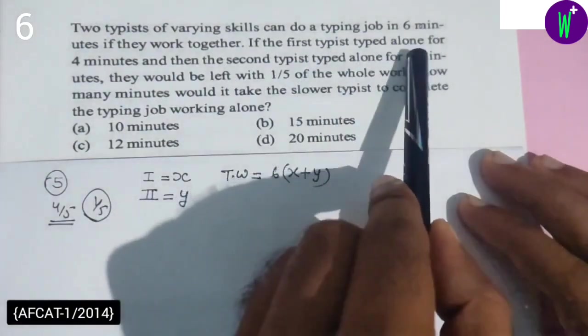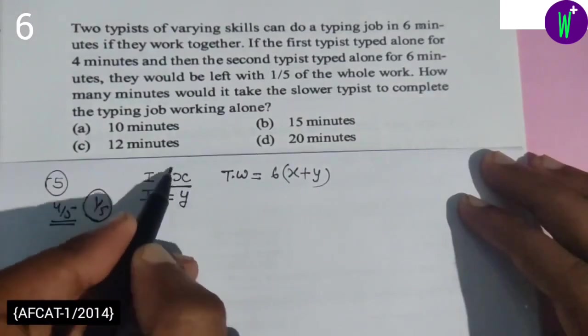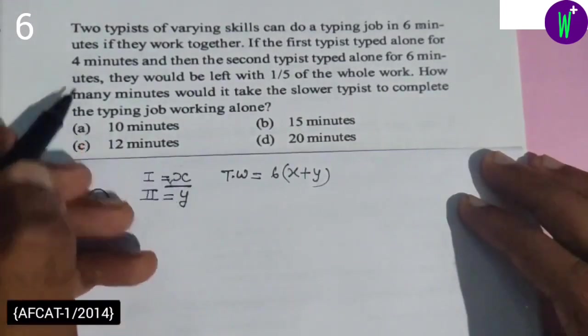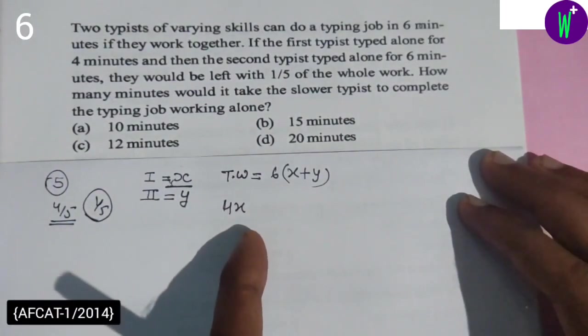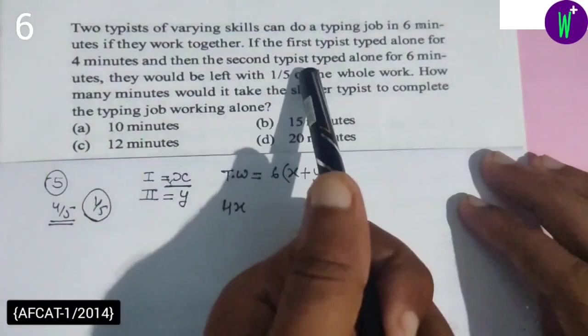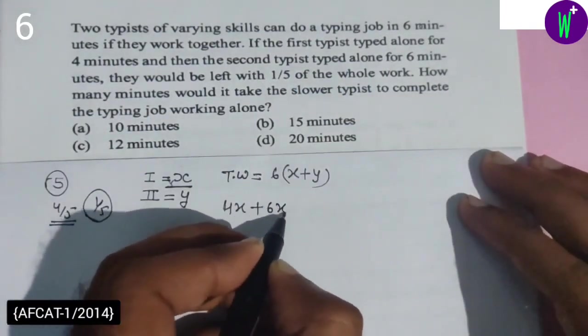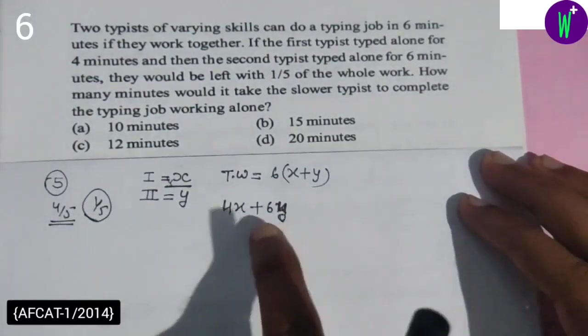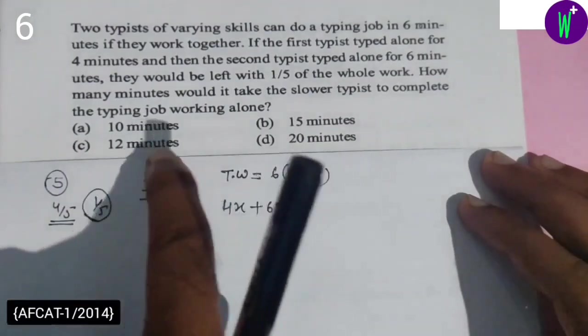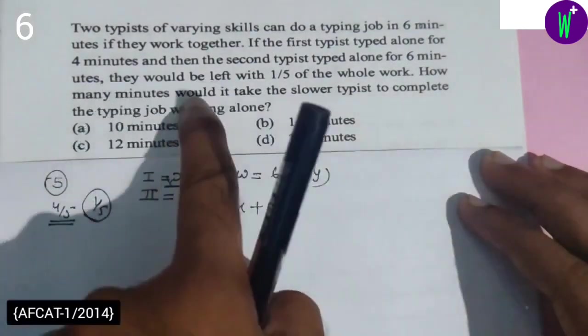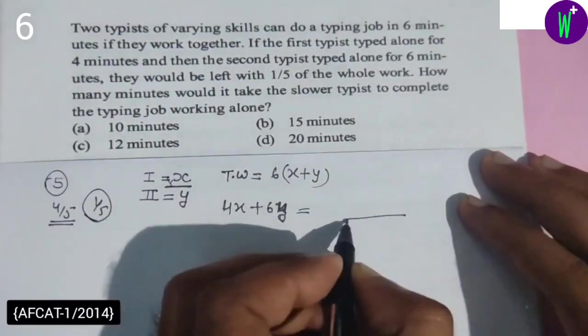Now what is given? If the first typist types alone for four minutes, if he does x units in one minute, then in four minutes he'll do 4x. Then the second typist types alone for six minutes, so the second typist does 6y. So 4x plus 6y is the work completed.